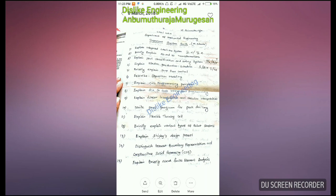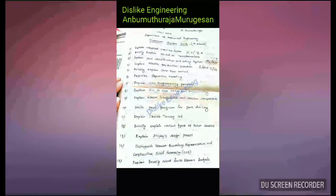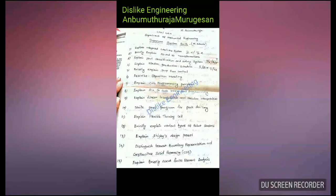The first question is: explain the Integrated CAD/CAM system. The second question is: explain 2D and 3D transformation. The third question is: explain Part Classification and Coding System. The fourth question is: explain Master Production Schedule (MPS) — this is simple to explain.